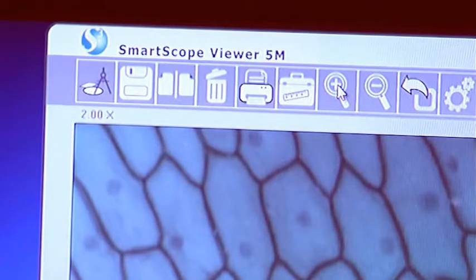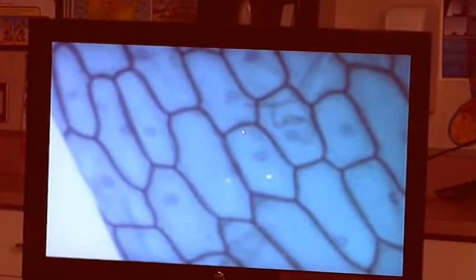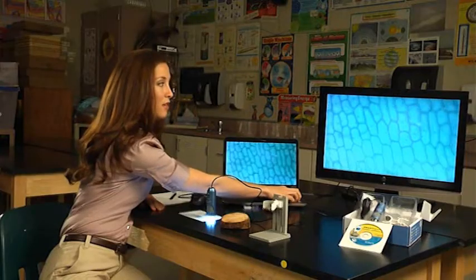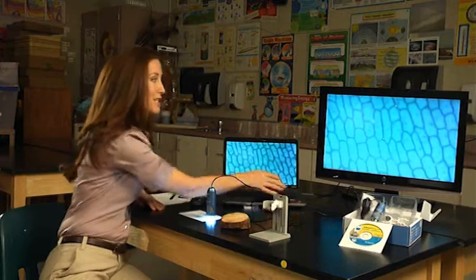So you can zoom in. You can go back into full screen mode. And you can even use the arrow keys to move around the picture. So you've got a lot that you can really zoom in and see here with the SmartScope 5M.